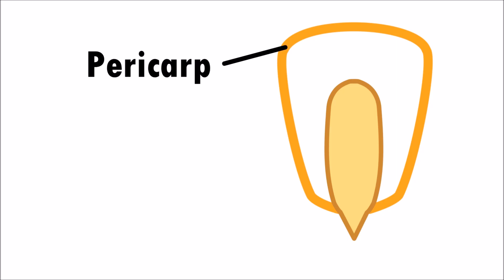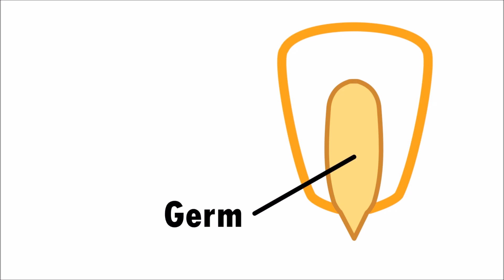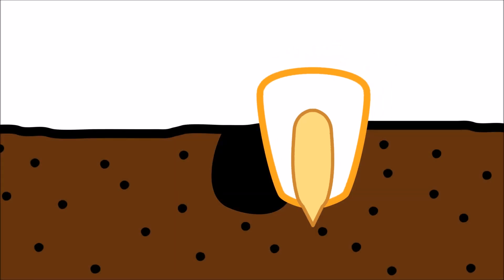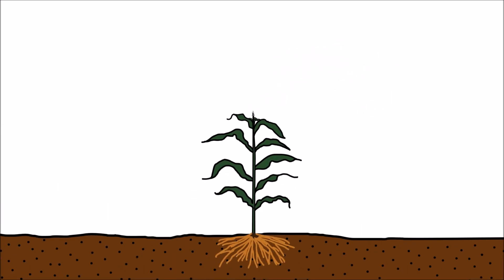Corn kernels have an external coating called pericarp. The pericarp protects the tissue inside the kernel called endosperm. Endosperm is made up of starch and provides nutrition to the kernel's germ. The germ is the reproductive part of the kernel. It contains the essential material to make a tiny kernel grow into a big plant.